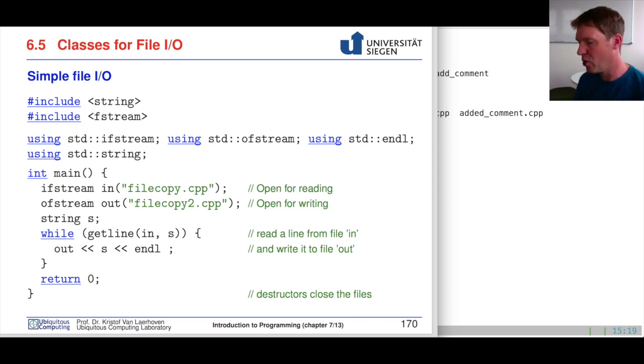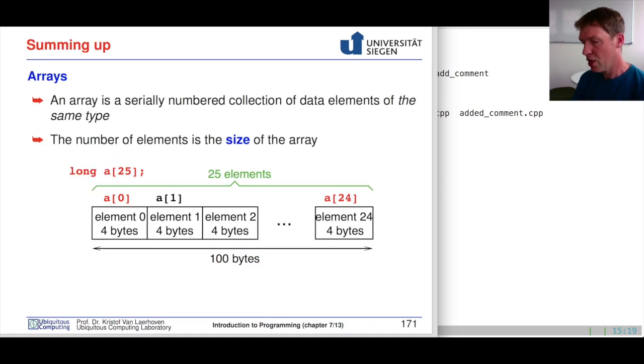Right, and this simple file I/O allows you to not only work in memory and input and output things to the console but also to use the file system. So what have we seen now in this chapter? We started with arrays where we saw that arrays are basically a way of compiling lots of variables of the same type. So in this case we have lots of variables of long integer type, 25 of them, and the specialty is that they start at 0 and end at 25 minus 1, namely 24.